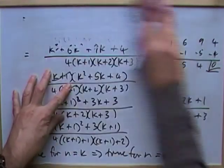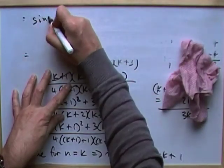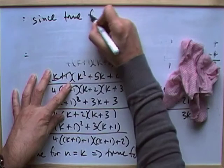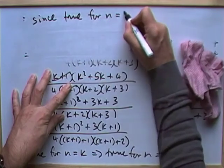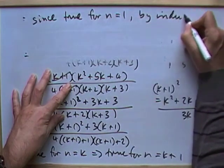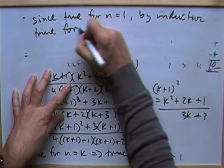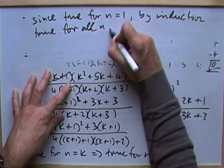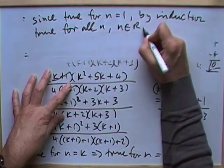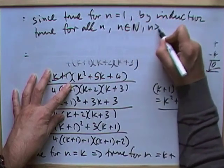And then, for example, I've just run out of space. I'll have to ruin the top part now. And then, since it was true for n equals 1, that means by induction, it's true for all n, n a member of, no it's not, n the natural numbers, n greater than or equal to 1.